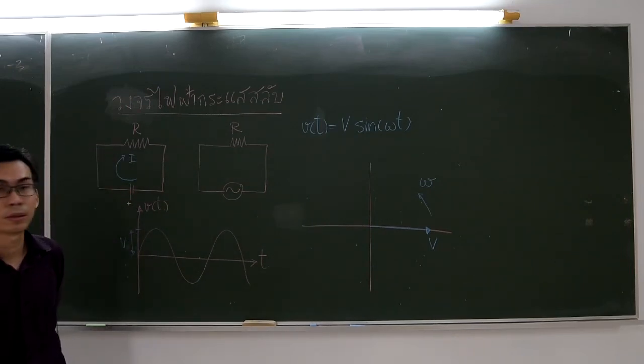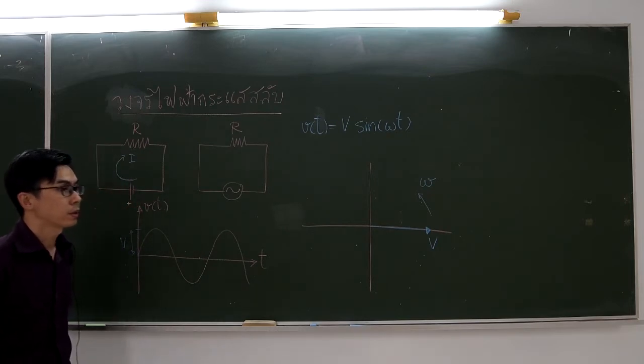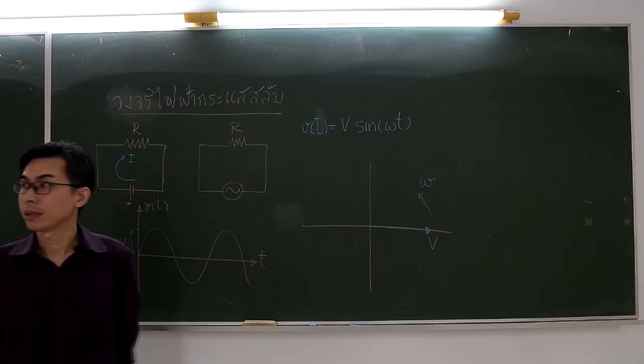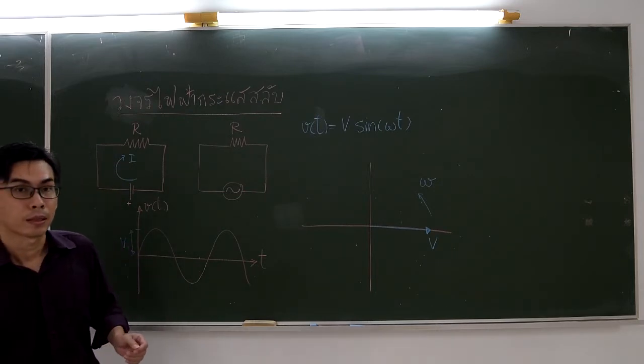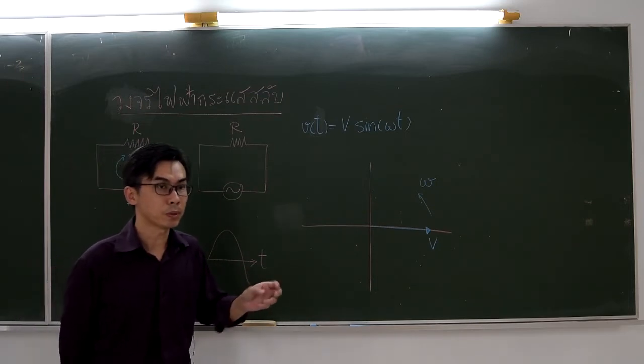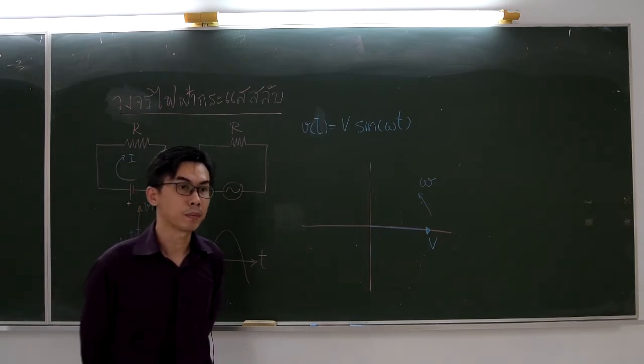Hello, this is experiment number 9, alternating current circuits. Have you ever wondered how radio receivers know which frequency to pick from many radio frequencies? The working mechanism behind it is the resonance phenomena.